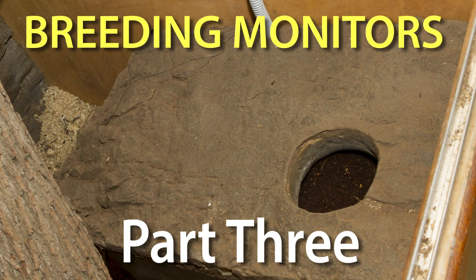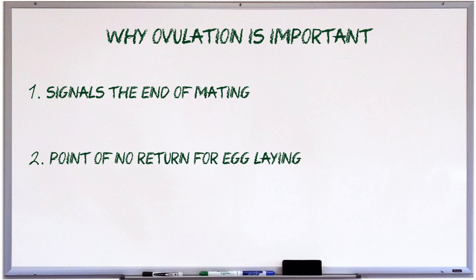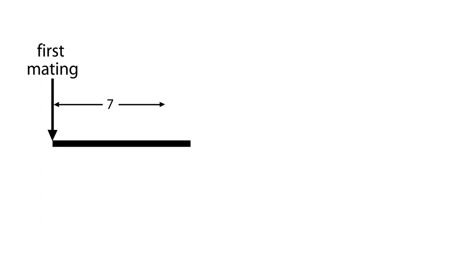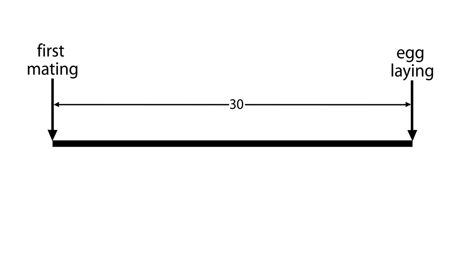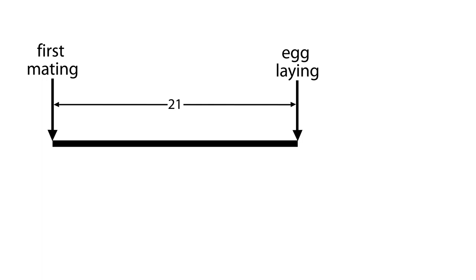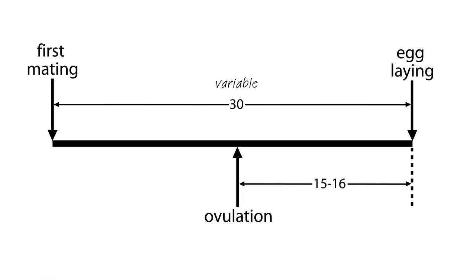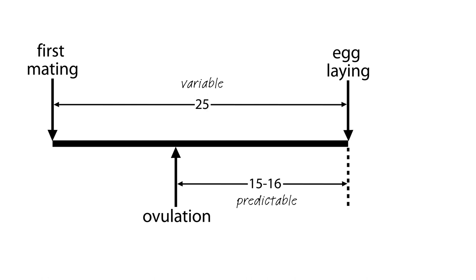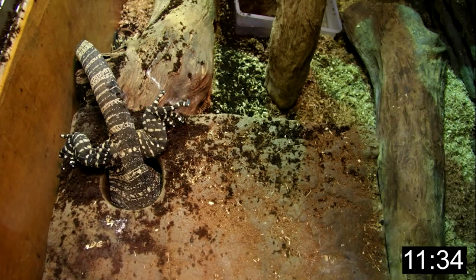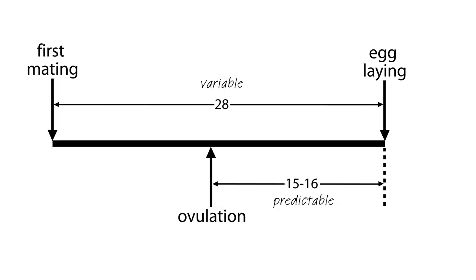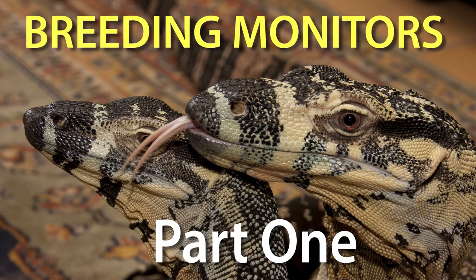Thirdly, ovulation is the most consistent predictor of when the female will lay. For a large monitor like the lace monitor, the timing between first mating and egg-laying is around 30 days, though I've seen females lay as little as 21 to 23 days after mating. What doesn't change is the timing between ovulation and egg-laying. In lace monitors, this is a predictable 15 to 16 days under controlled conditions indoors — predictable enough that I've set up a time-lapse camera to record egg-laying because I knew the female would be laying that day. This period will be shorter in smaller species, so keep detailed records to pick up the patterns with your particular monitors.